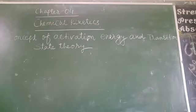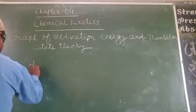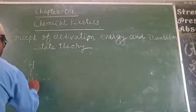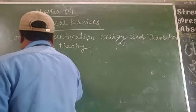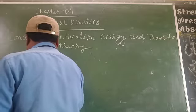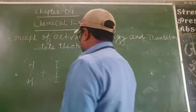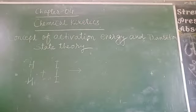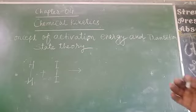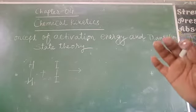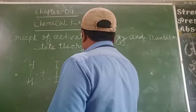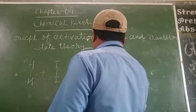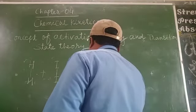For example, we take H2. The bond between H and H is single bond. Now we react with iodine. First of all, it will form activated complex or intermediate. This will be the activated complex.